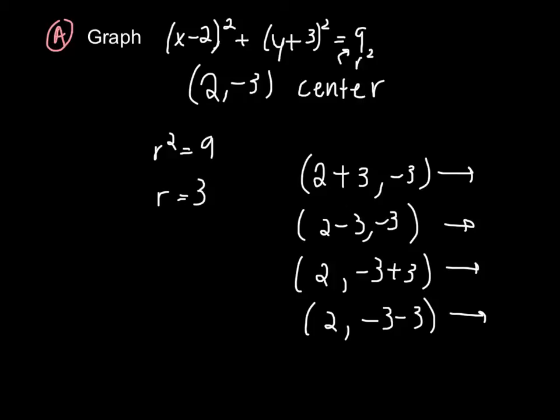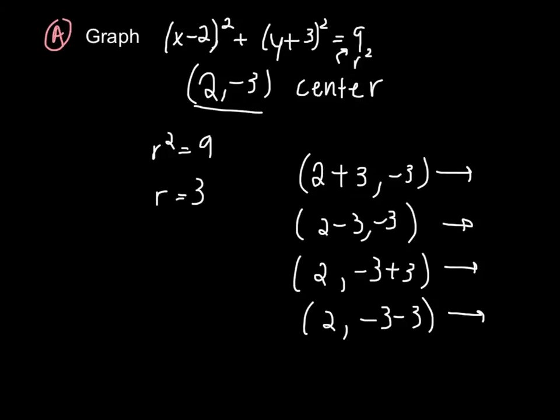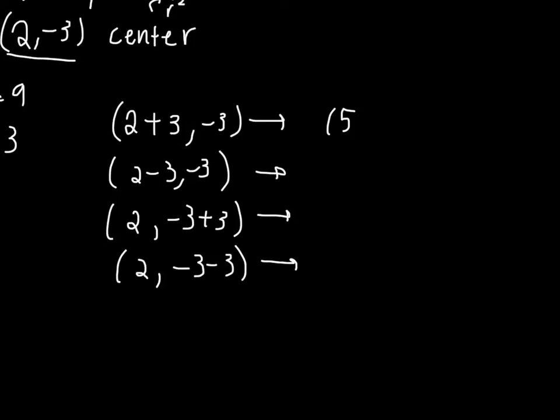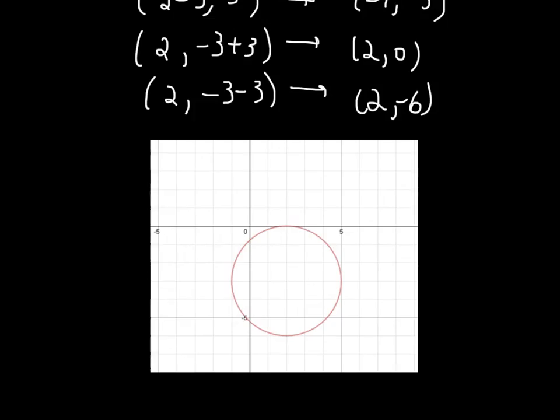Rather than just having our center at 0, 0, we have our center at 2, negative 3. So our points are 5, negative 3; negative 1, negative 3; 2, 0; and 2, negative 6. You can see our circle here with its center at 2, negative 3, and it has 3 units as its radius.